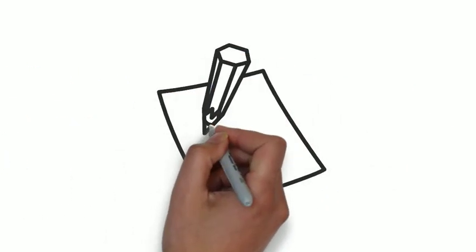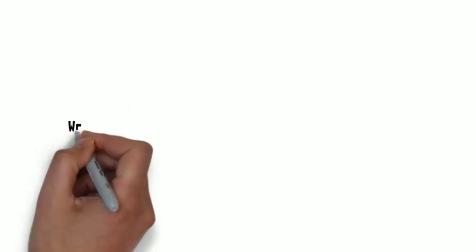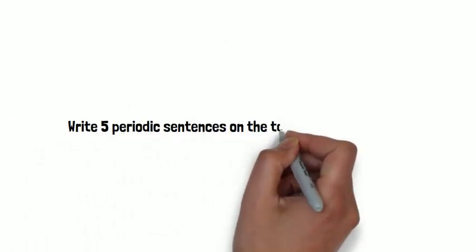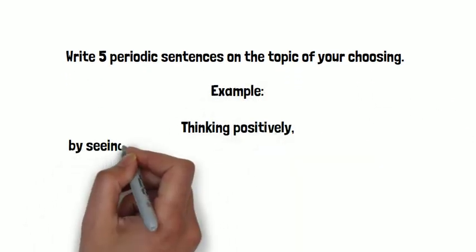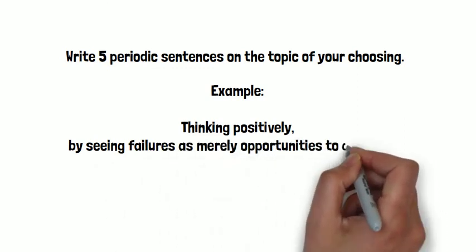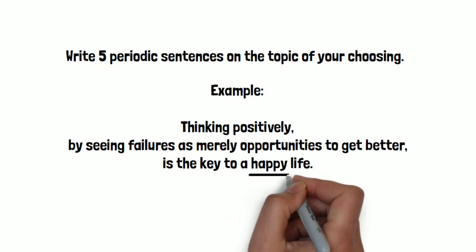Now that you know more about periodic sentences, here's your task. Write five periodic sentences on the topics of your choosing. Then, explain why leaving the main point, or independent clause, for the end of the sentence makes sense for each of your examples. Good luck.